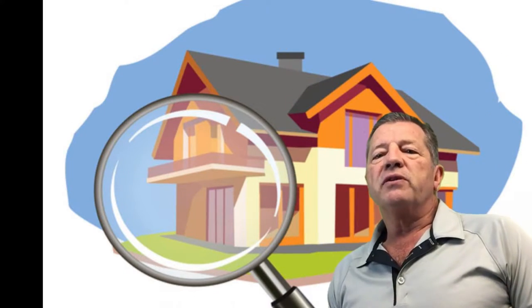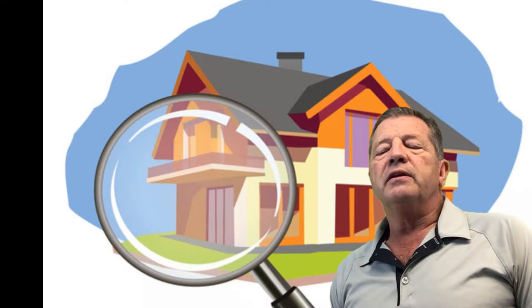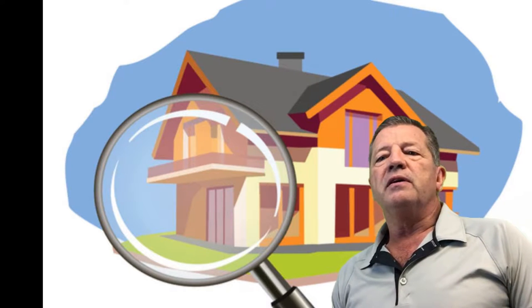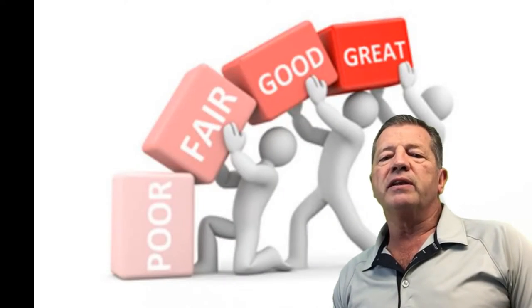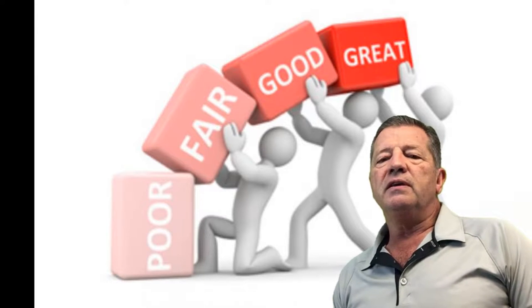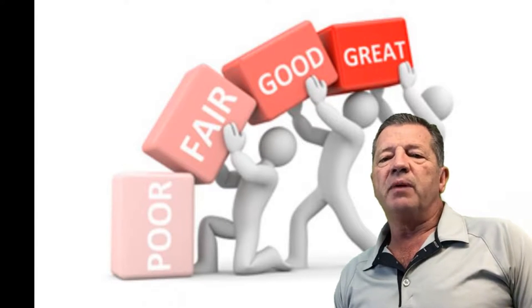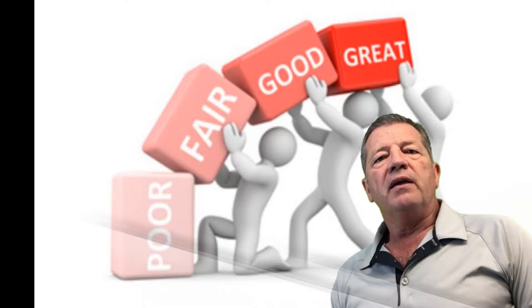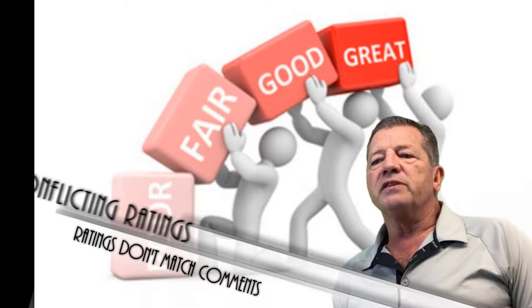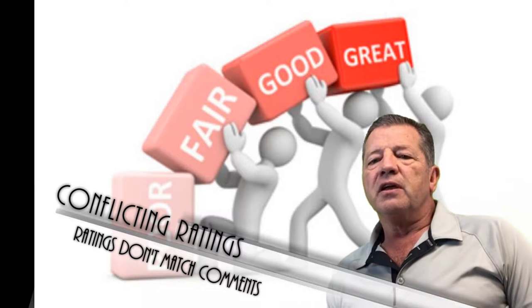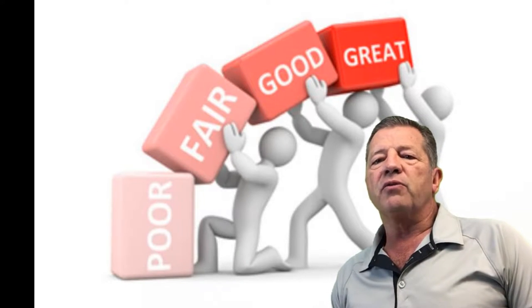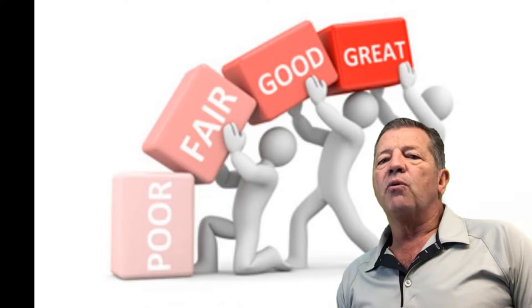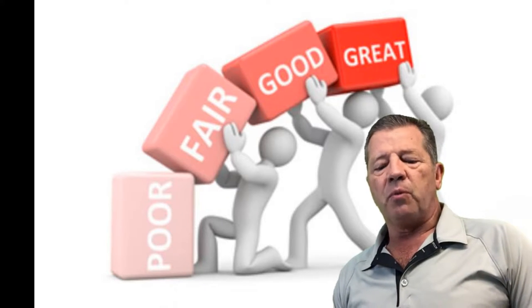The appraiser is required to develop an opinion about the quality and the condition of the property. Oftentimes, the comments provided within the body of the appraisal are in conflict with the property ratings that have been provided by the appraiser. For example, the appraiser indicates that the house is average quality construction in the comments, but has rated the property as C3 or good quality construction. The same can apply for condition or other elements associated with the property.